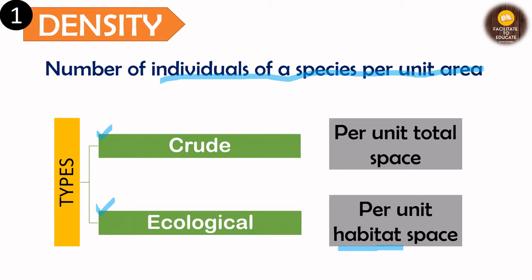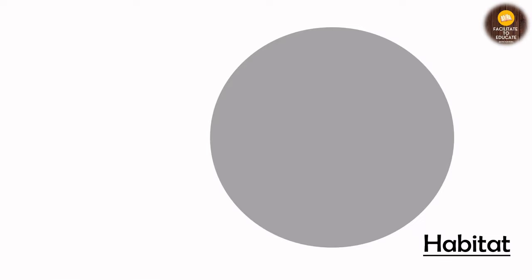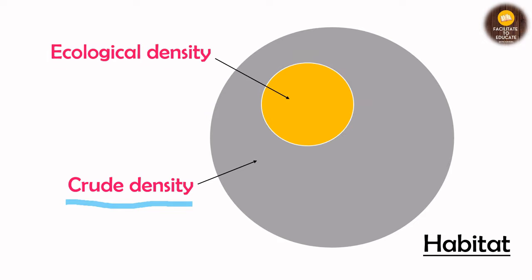We will understand it by a diagram. For example, this is a total habitat. If we are dividing by the total habitat that is present, it will be crude density. Now, there is a specific space in which the organism is actually residing, and there are no organisms of that species in the remaining area. So we are just taking the amount of area in which it is actually residing — then it will be called the ecological density.